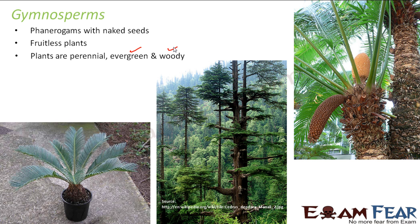In gymnosperms the seeds are naked, meaning they are open and not enclosed in anything. In angiosperms, the seeds are enclosed inside fruits — for example, inside an apple you have small black seeds. The apple tree is an example of angiosperm because the seeds are enclosed inside the fruit. But gymnosperms have no fruit at all, so where are the seeds located?